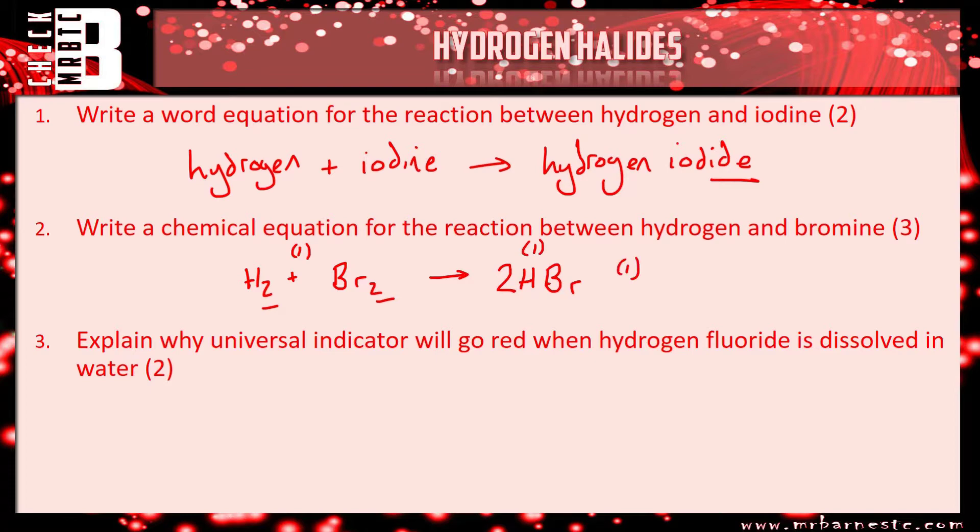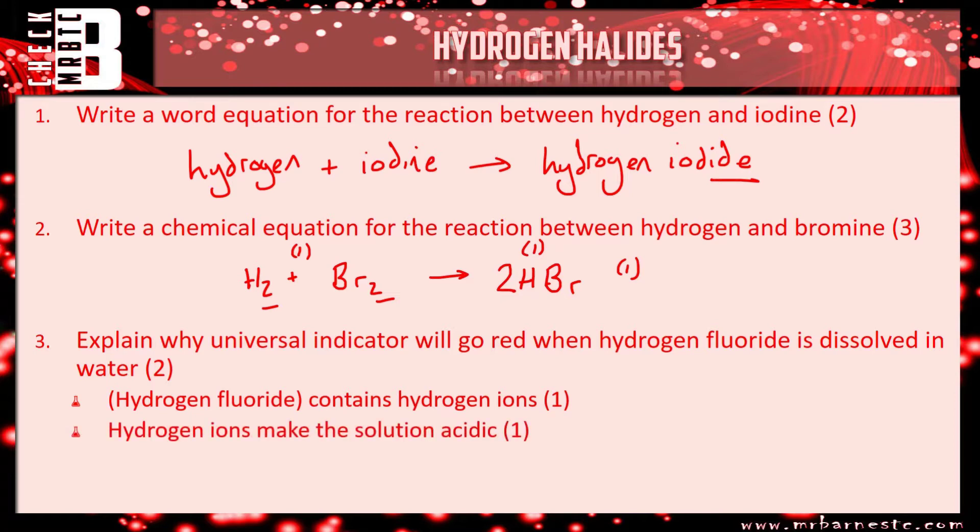Question three: explain why universal indicator will go red when hydrogen fluoride is dissolved in water. So your first marking point is for saying it contains hydrogen ions, and the second mark is for saying hydrogen ions make the solution acidic.